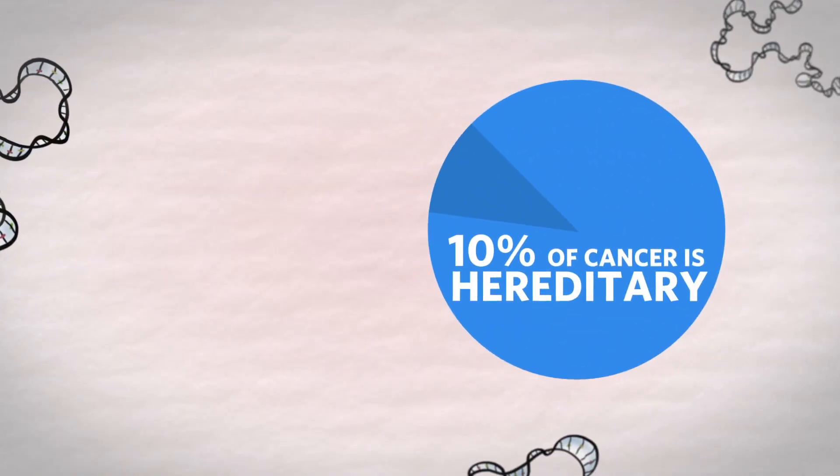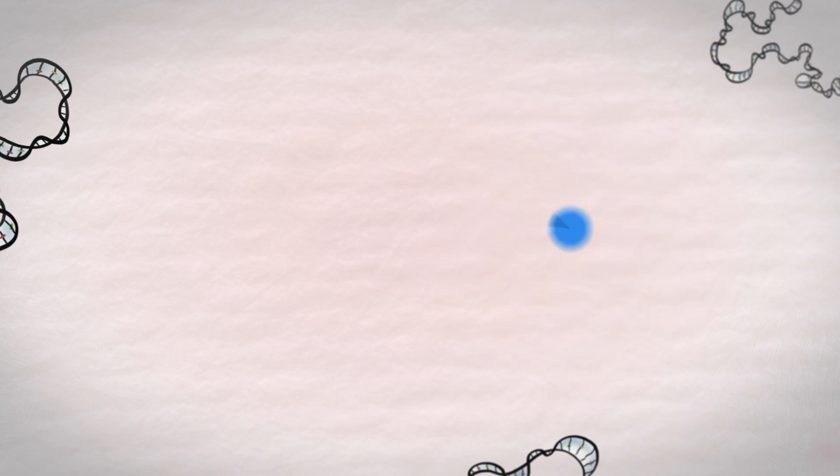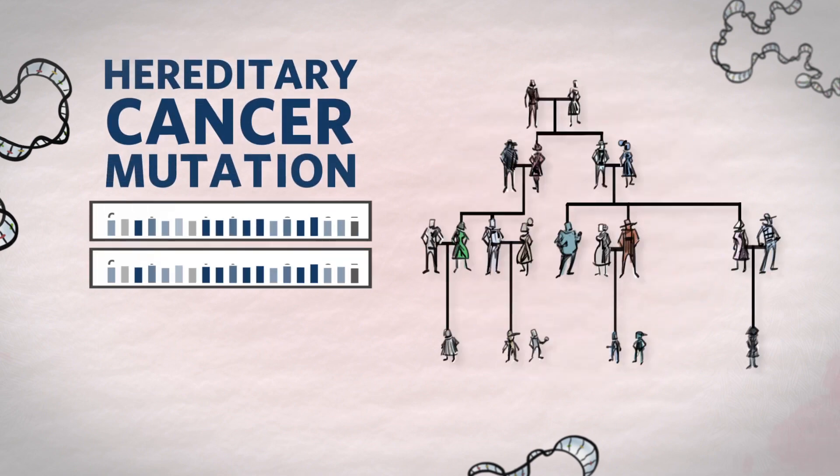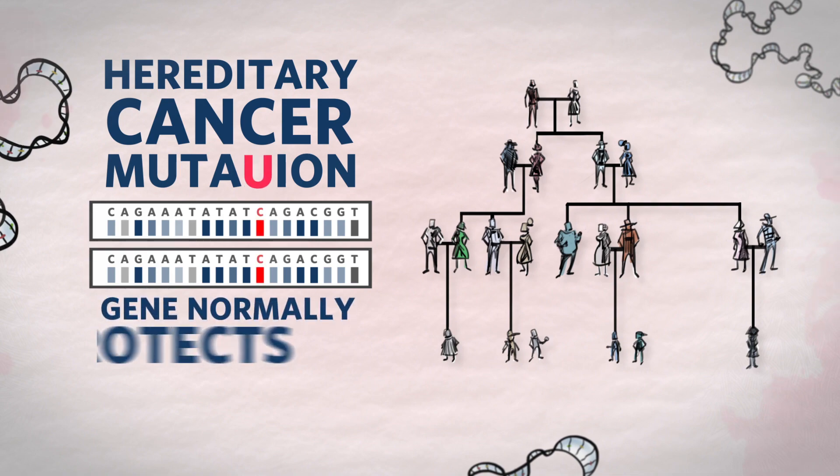About 10% of cancer is hereditary. Hereditary cancer can happen when someone has a mutation, which is like a spelling error in a gene whose job it is to protect the body from cancer.